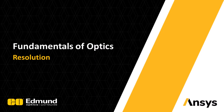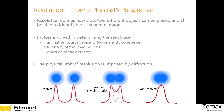In this section, we will discuss resolution based on the perspectives of physics and lens design. Resolution of a system defines how close two objects can be and still be detectable as separate images. Diffraction imposes a physical limit on this resolution. Two objects are considered just resolved when the diffraction maxima of one overlaps with the minima of the other. This condition is called the Rayleigh criterion.